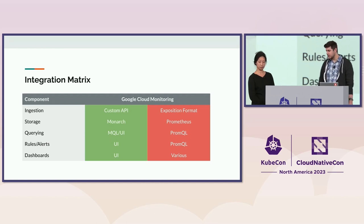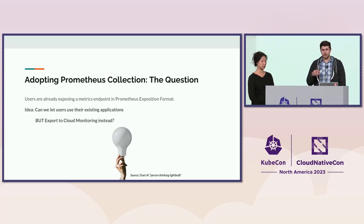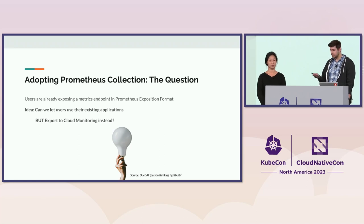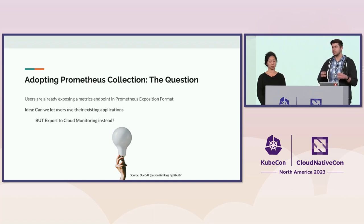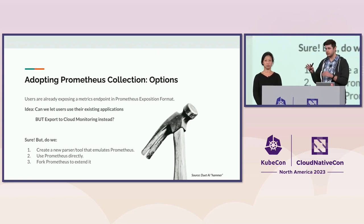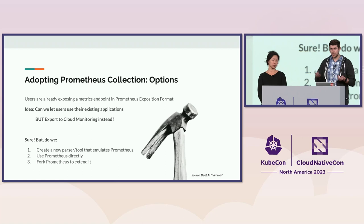We arrived at a feature matrix, subdivided into small components corresponding to the observability lifecycle. Starting with ingestion: most users already are using Prometheus — for example, if they're coming from on-prem solutions or using common tools with exporters. How can we allow customers to use those but instead of storing in Prometheus, get it into Google Cloud Monitoring? We had three options. Option one: write a tool that does exactly what Prometheus does and scrapes the metrics endpoint, but that would be a lot of work — we'd have to replicate Prometheus logic, and if Prometheus changes, we'd have to change too.